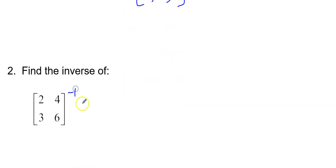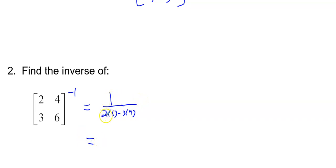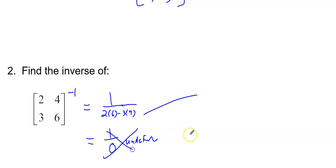Find the inverse of [2, 3; 4, 6]. We get 1 over the determinant: 2 times 6 minus 3 times 4 — that's 12 minus 12, which is 1 over 0, which is undefined. So there is no inverse here. Not all square matrices have an inverse, so be careful — some just don't have one.